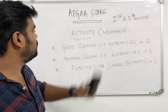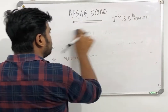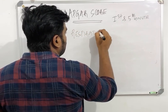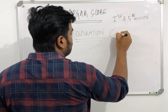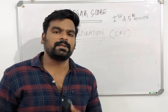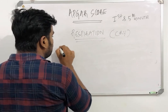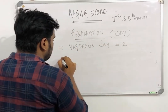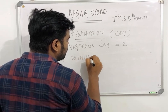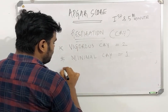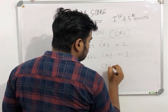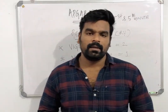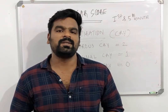The last component is Respiration. We check the cry, since first respiration is achieved through crying. A vigorous cry gives a score of two, a minimal cry gives a score of one, and no cry gives a score of zero. That's all about the APGAR score — see you in the next video, thank you.